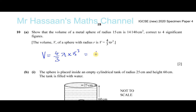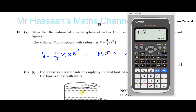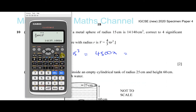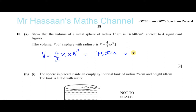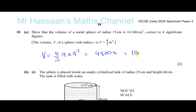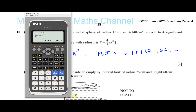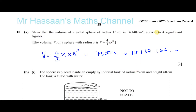So 4 over 3 × π × 15³ gives us 4500π. Write that down first: 4500π. If you press the S-to-D button it will give you the decimal, which is 14,137.166... continuing on after that as well.